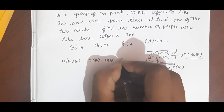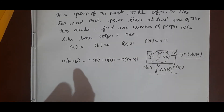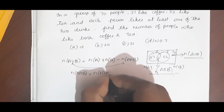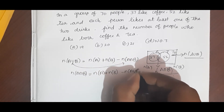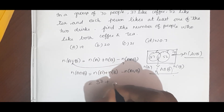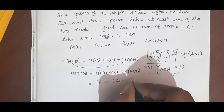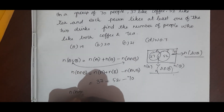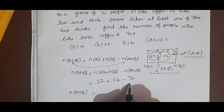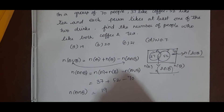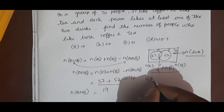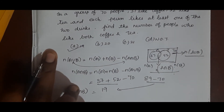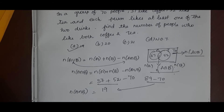Using the formula n(A union B) equals n(A) plus n(B) minus n(A intersection B), we rearrange: n(A intersection B) equals n(A) plus n(B) minus n(A union B). Substituting: 37 plus 52 minus 70 equals 89 minus 70, which gives 19. So 19 people like both coffee and tea. The answer is option A.